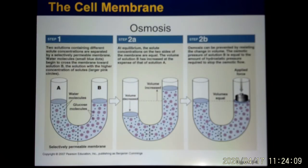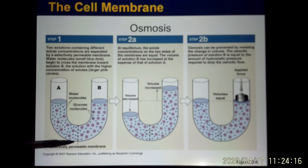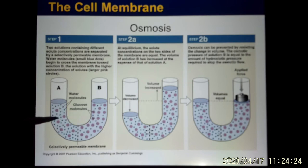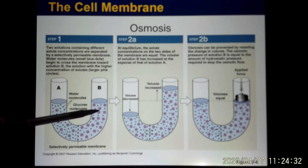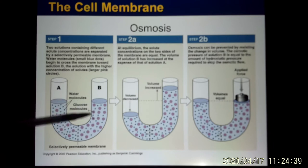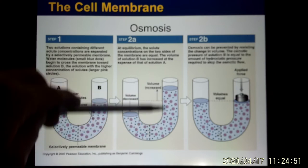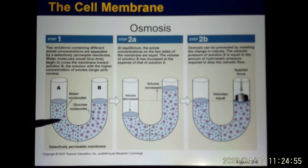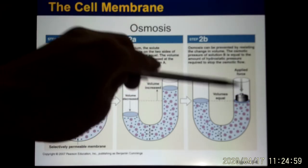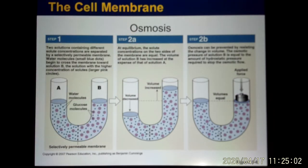For water, there is osmosis. In this example, we have two containers separated by a semi-permeable membrane. On the B-side, glucose is more concentrated than the A-side. Glucose naturally wants to go from high to low concentration, but it cannot cross the semi-permeable membrane. So only water can move — water goes from A to B to dilute the solute. That's osmosis. The pressure needed to push water back is the osmotic pressure.